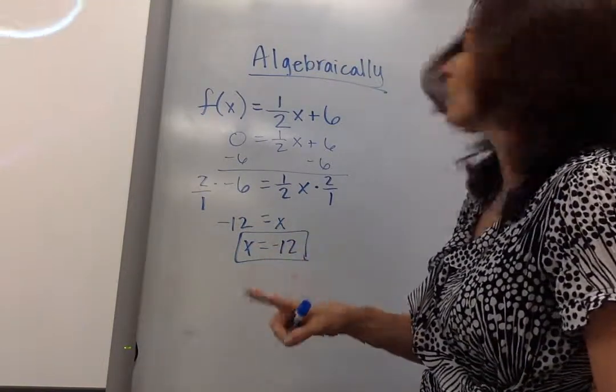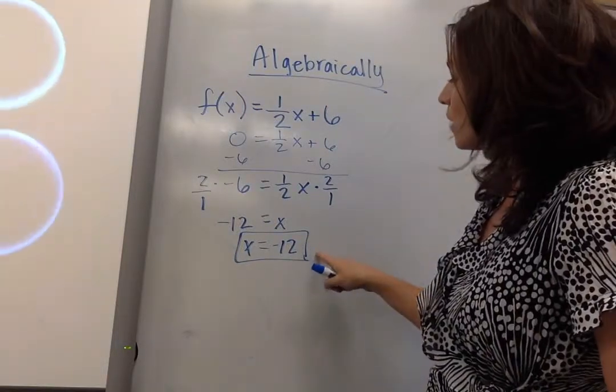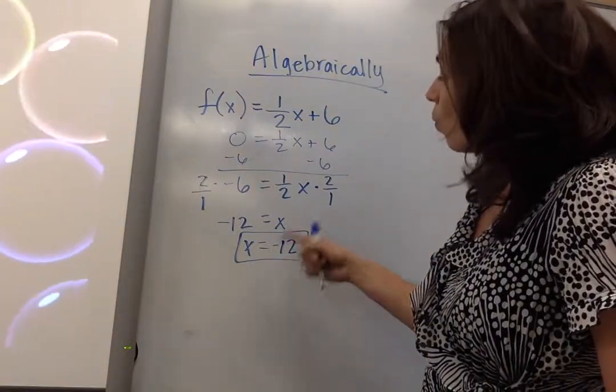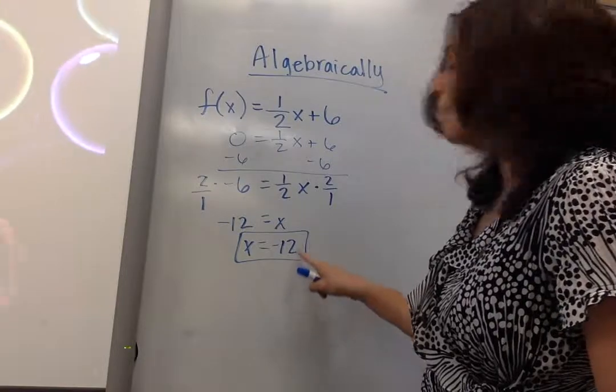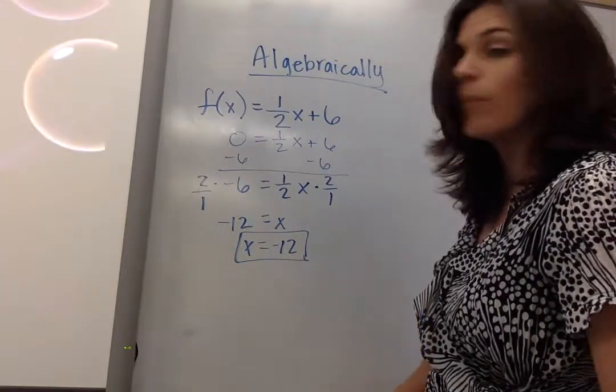I have one solution to this example, and x equals negative 12. So where does it cross the x-axis? It crosses it at negative 12. Let's try one more.